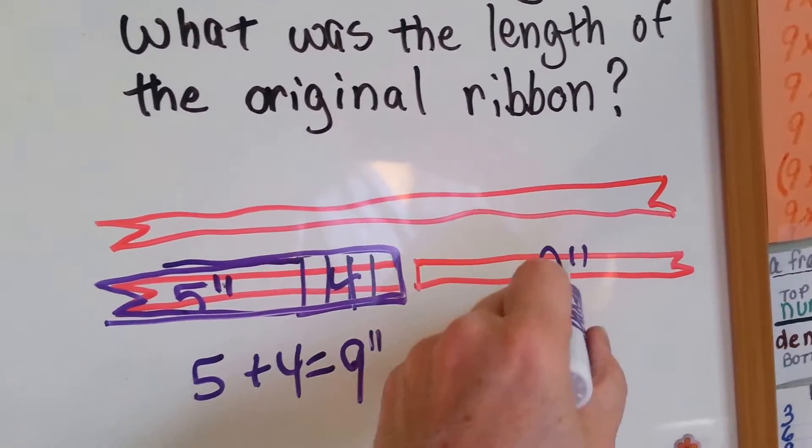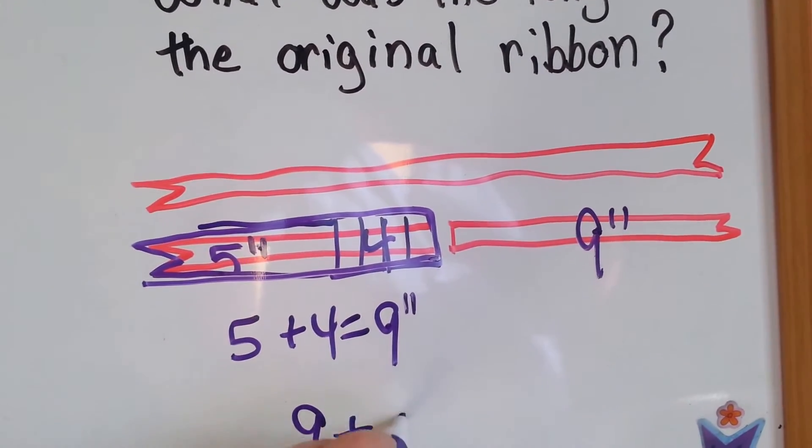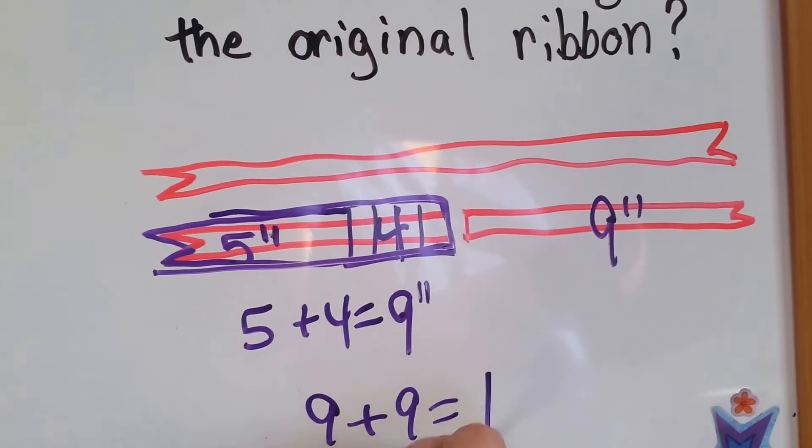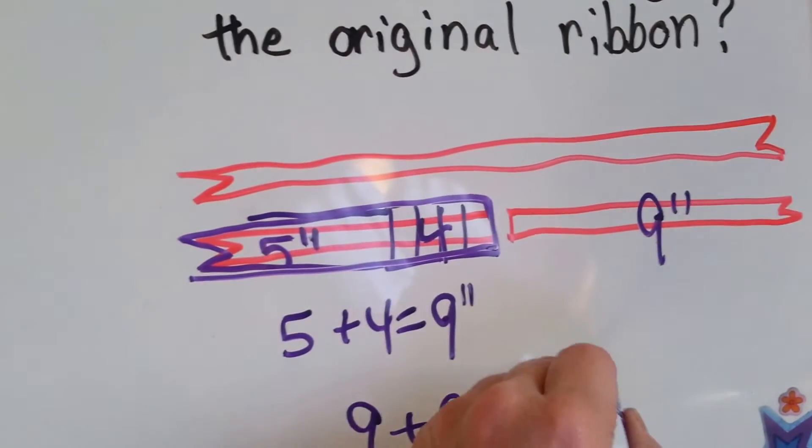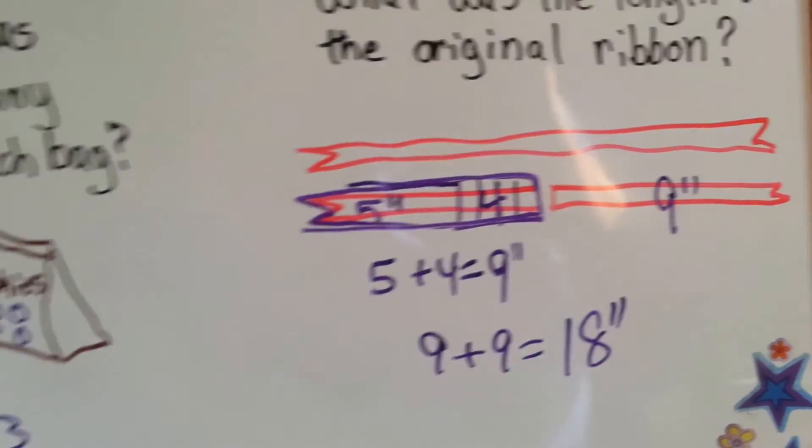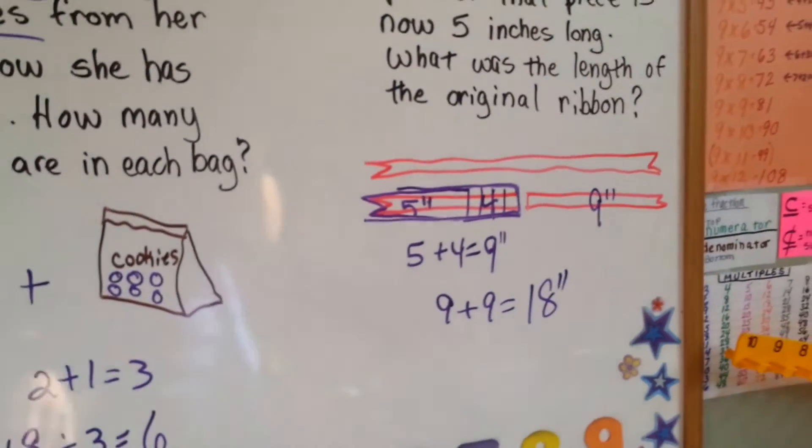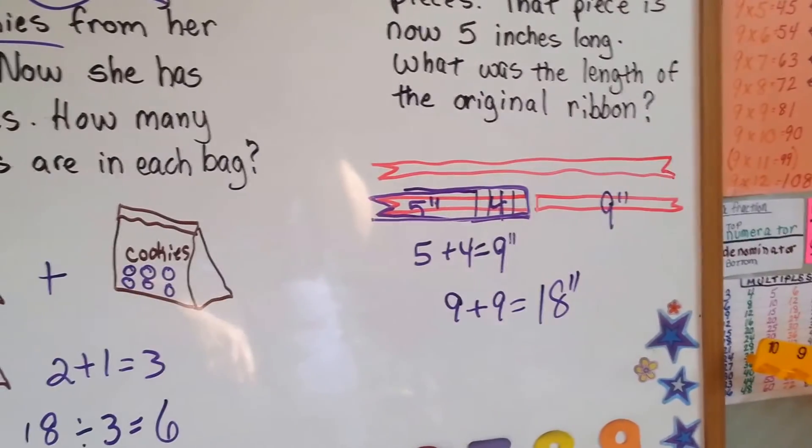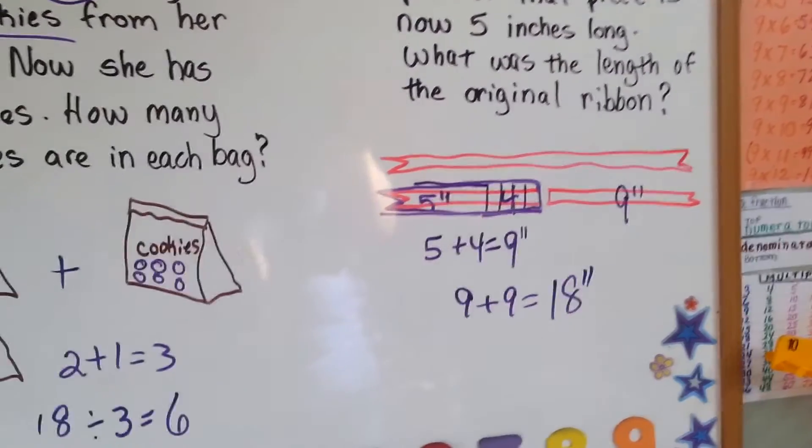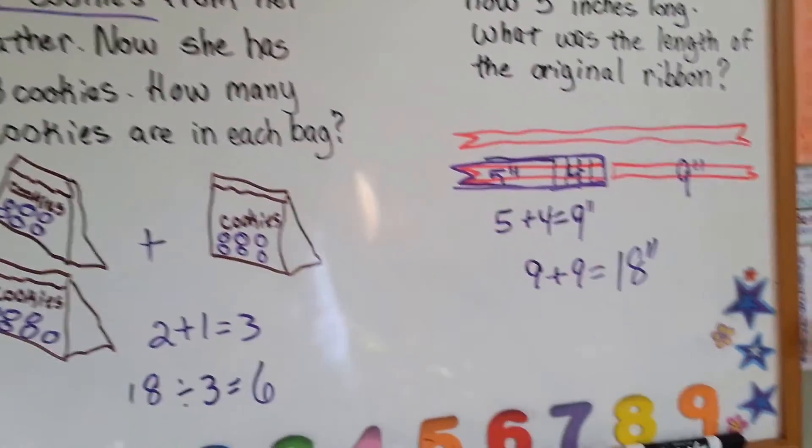So, now we have to add this piece to this piece. And we've got 9 plus 9 equals 18 inches. It's very important you put the inches. You've got to label your answers. What if it was horseshoes or tennis balls? You want to know that it was inches.